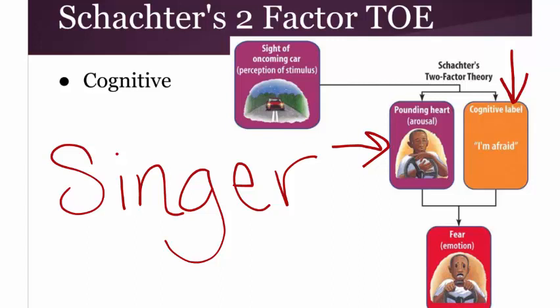Unlike James-Lange, which says this arousal creates one specific emotion, Schachter says our body reacts the same way to many different things and many emotions share the same physiological arousal. So a second factor is needed: our mind must interpret the arousal and label it as something. Here, the mind says 'I'm afraid' and creates the emotion of fear. You can have a pounding heart associated with many things — in this situation, your mind looks at the context to determine what's happening.